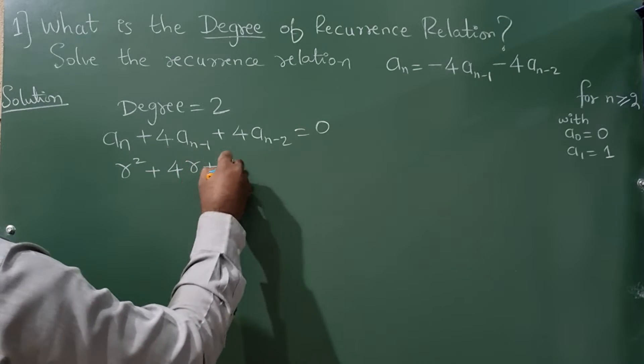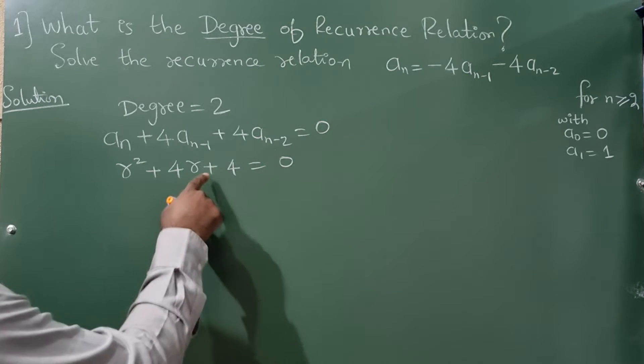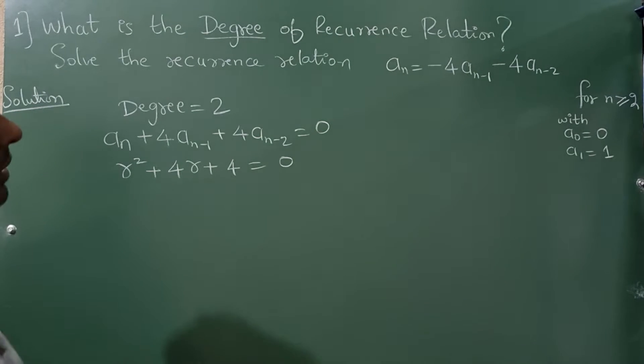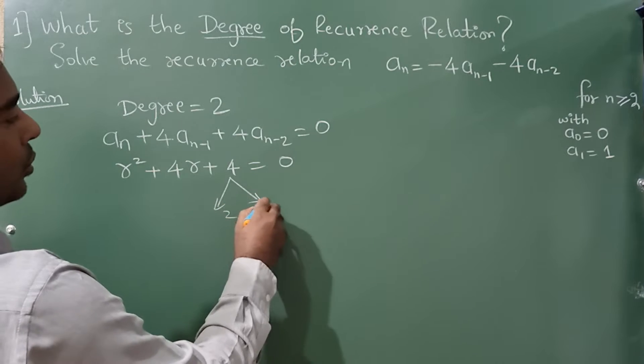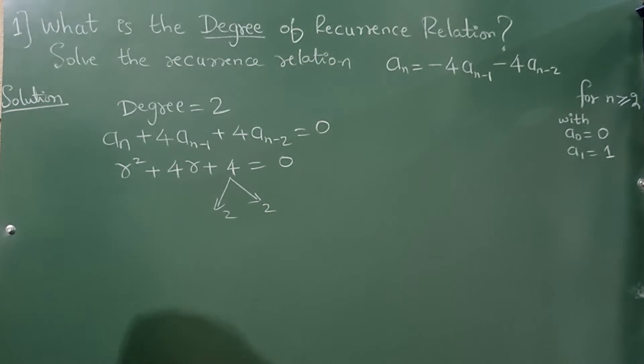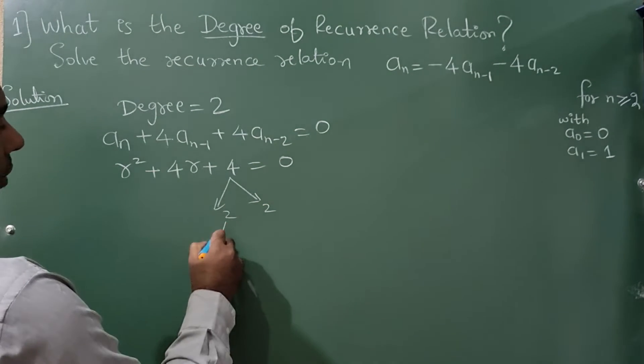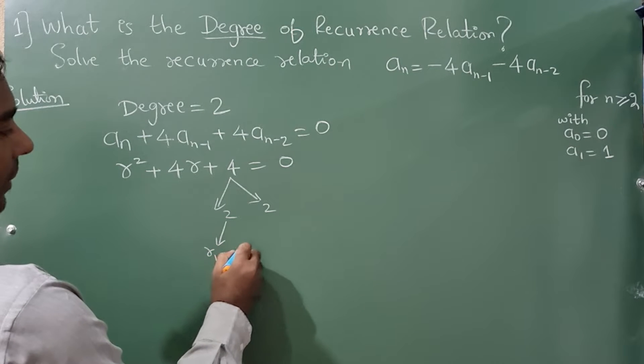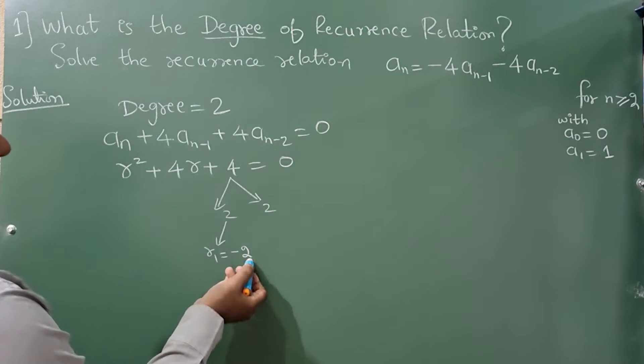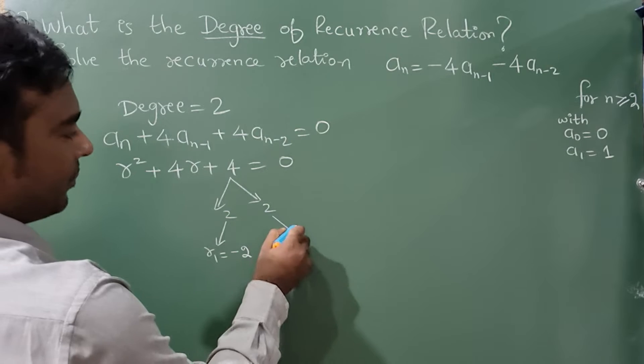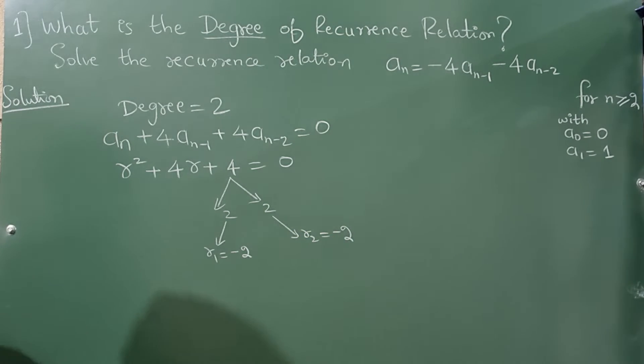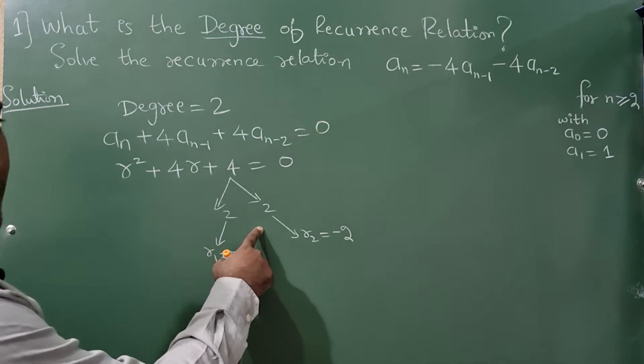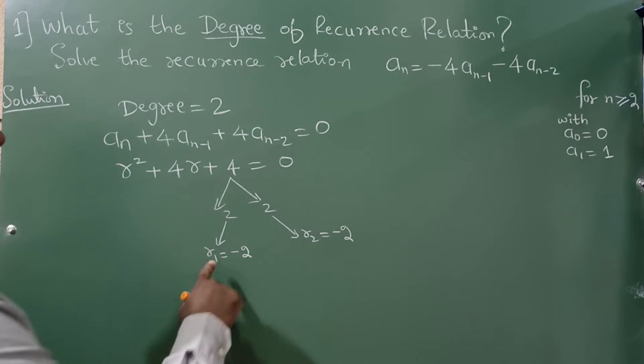plus 4 is equal to 0. You can solve this characteristic equation by calculator or by factorizing 2 to the 4. Now r₁ will become -2. If it is plus then you have to take minus. r₂ will become -2. This is by factorization method. You can even use calculator and get the characteristic equation.